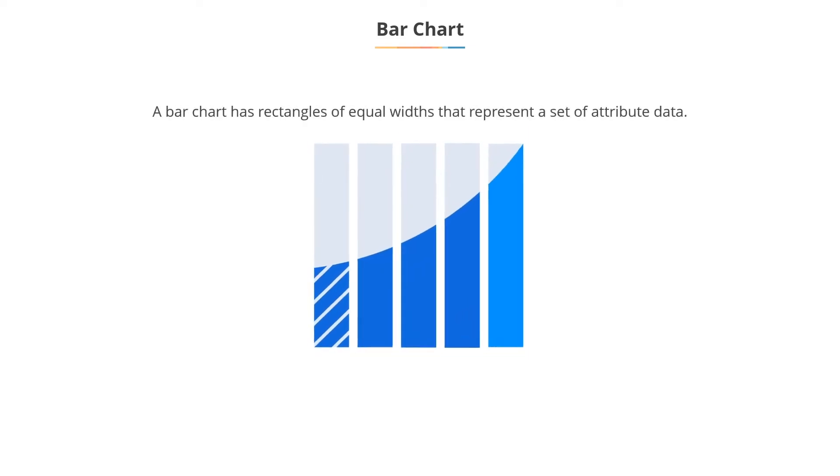First is the bar chart. A bar chart for a set of attribute data consists of rectangles of equal widths, whose heights are proportional to the frequencies of occurrences of each of these attributes.